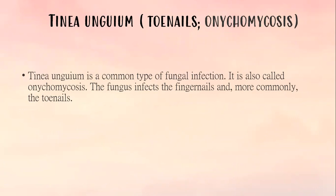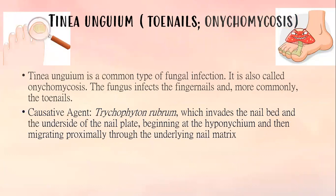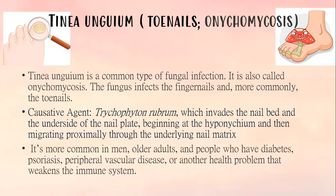The next type of tinea is tinea unguium, affecting the toenails, also known as onychomycosis. Tinea unguium is a common type of fungal infection that infects the fingernails and more commonly the toenails. The causative agent is trichophyton rubrum, which invades the nail bed and underside of the nail plate beginning at the hyponychium and migrating proximally through the nail matrix. It is more common in men, older adults, and people who have diabetes, psoriasis, peripheral vascular disease, or other conditions that weaken the immune system.